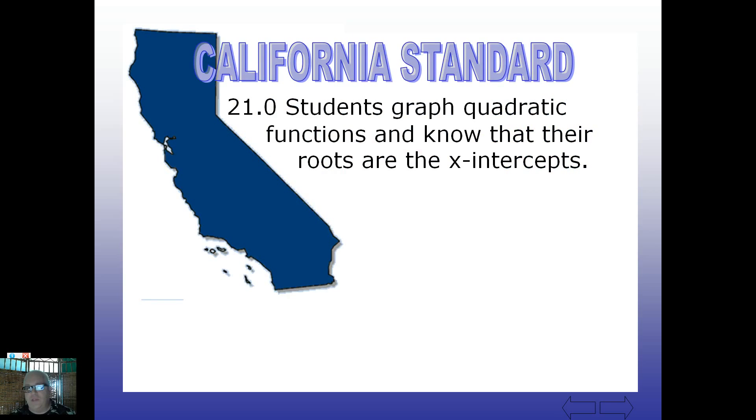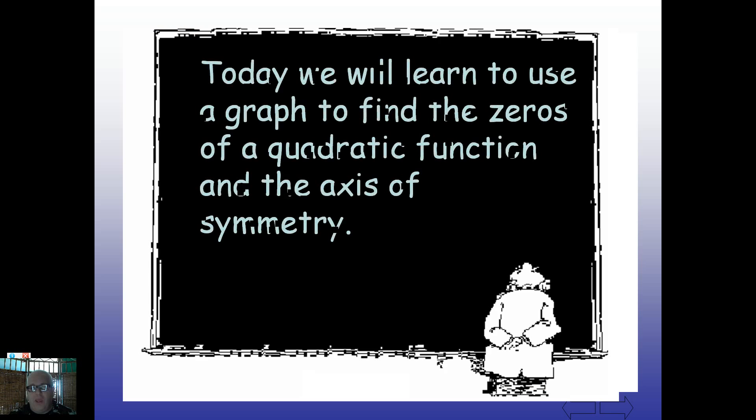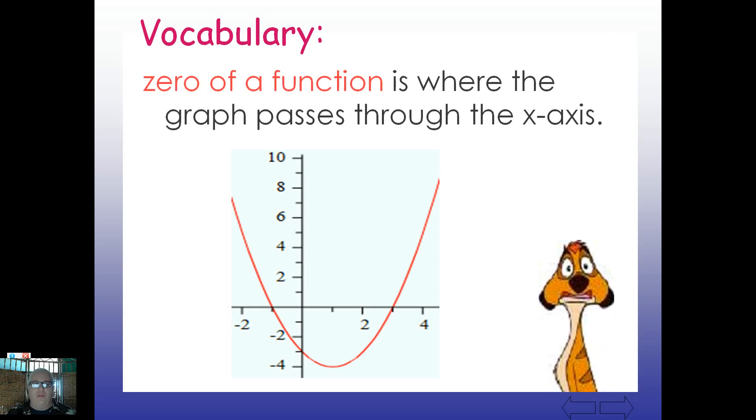We're still in standard 21.0 and today we're going to learn to use a graph to find the zeros of a quadratic function and something called the axis of symmetry. So two big ideas here: zeros and an axis of symmetry. So the zero of a function, what does this mean?